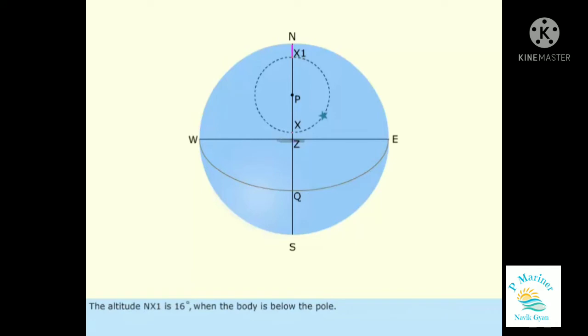The altitude NX1 is 16 degrees when the body is below the pole. The altitude NX is 84 degrees when the body is above the pole. PX equals PX1, and both are the polar distances.